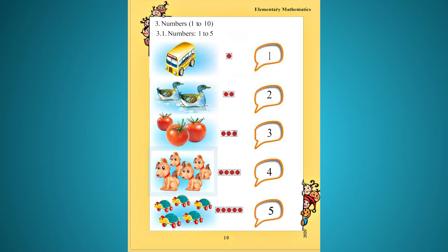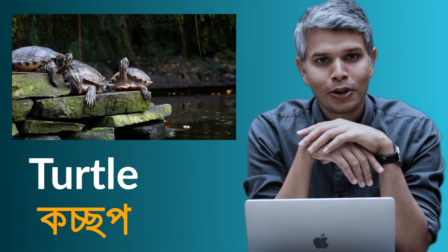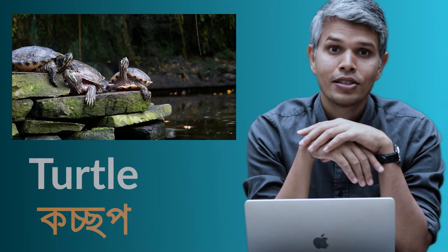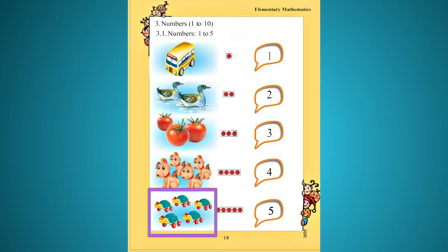The puppies are called puppy. We will call this puppy a bell and show you the puppies. In the fifth picture, we have five turtles — five tortoises.